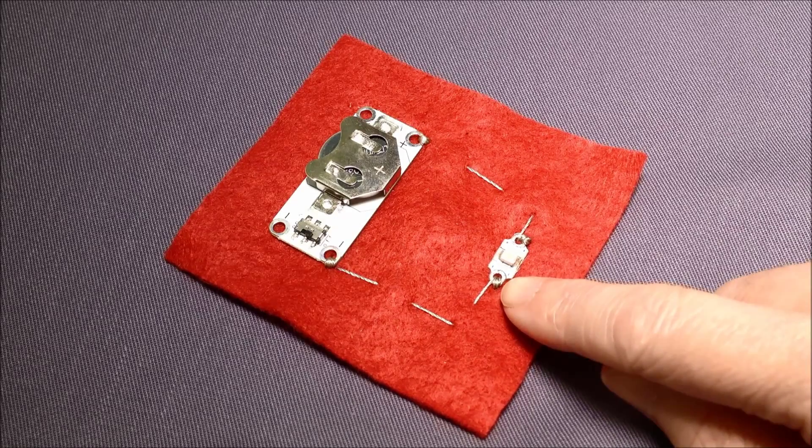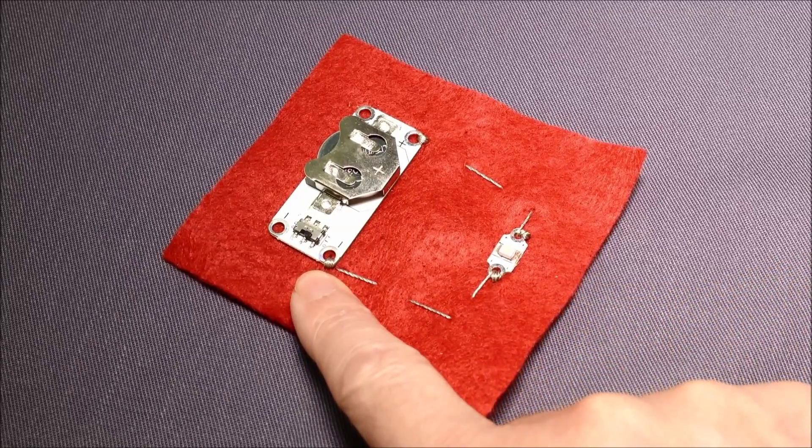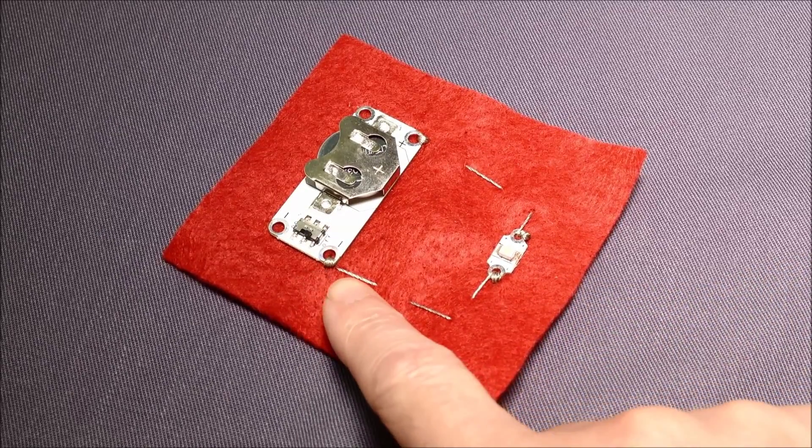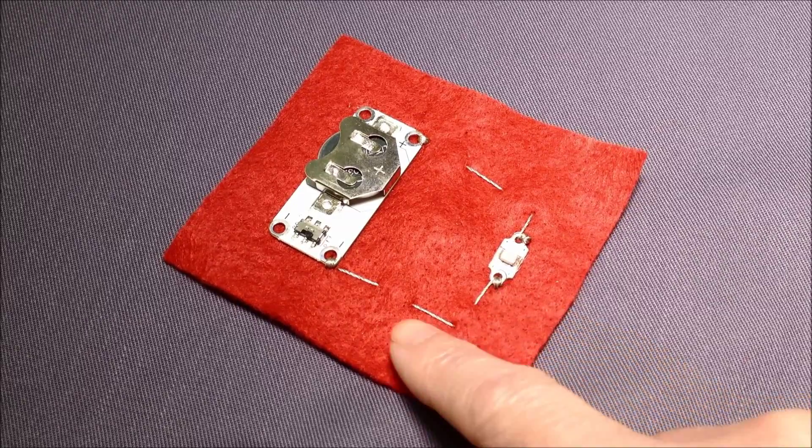The over sewing stitches are used to hold the LEDs in place and the same with the cell holder, and the running stitch are the stitches that join the LED and the cell holder together.